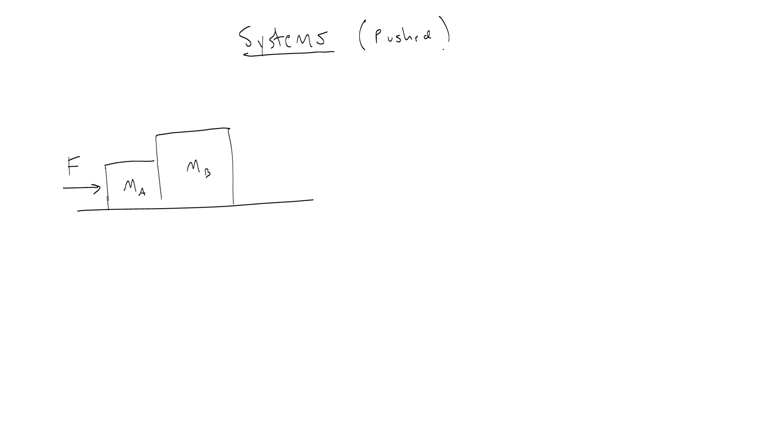Alright, so in this problem let's say that you have two blocks. The first one we'll call MA, we'll say it has a mass of 2 kilograms, and then MB, we'll say it has a mass of 3 kilograms. And you will normally have some external force that looks like it's pushing on the object. So let's say that this is a force of 100 newtons. And there is no friction, we need to say that.